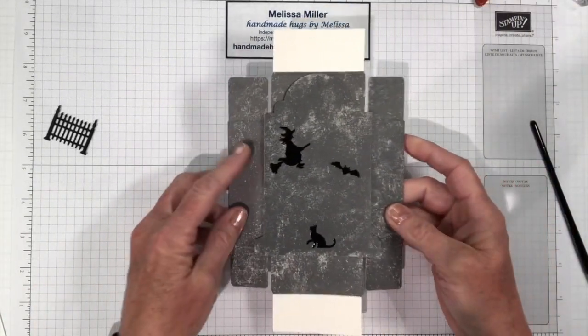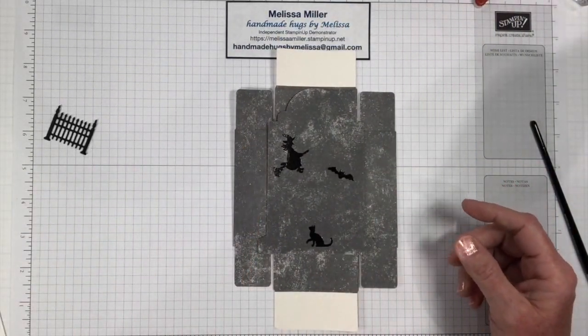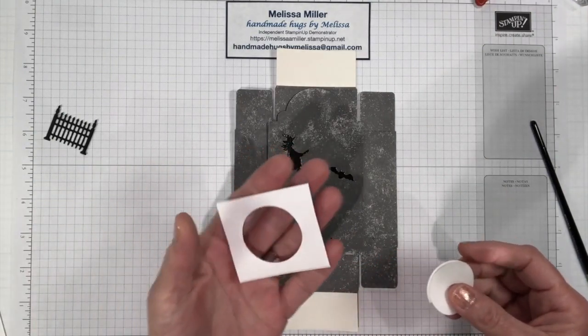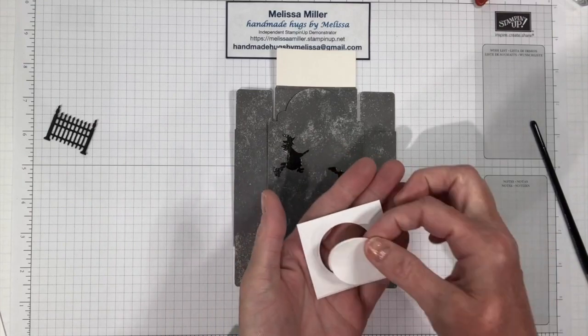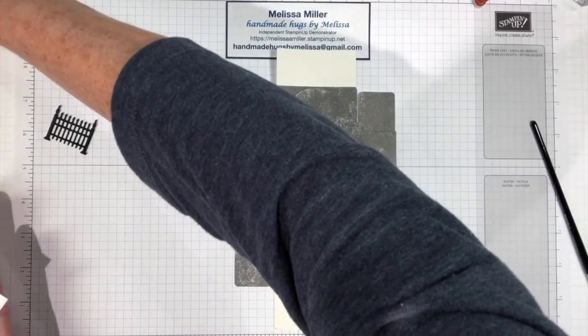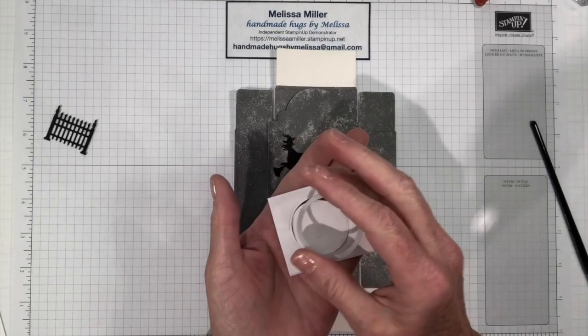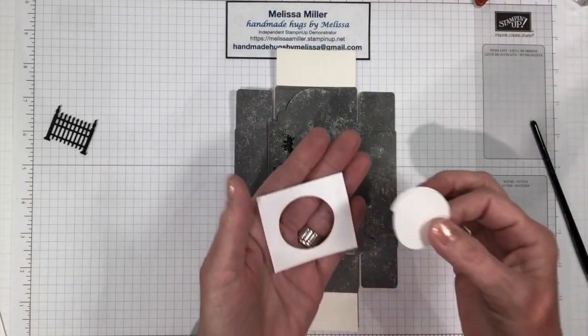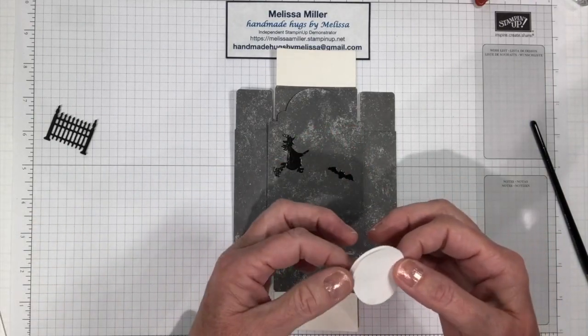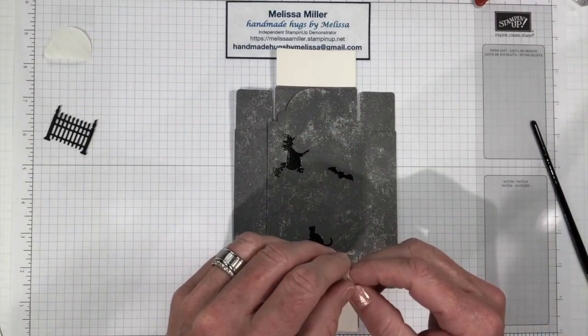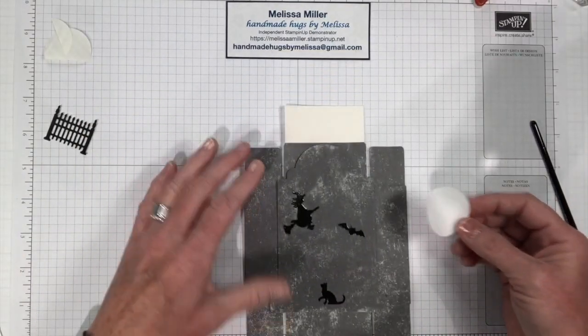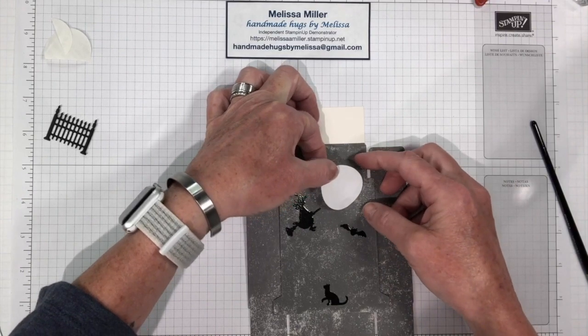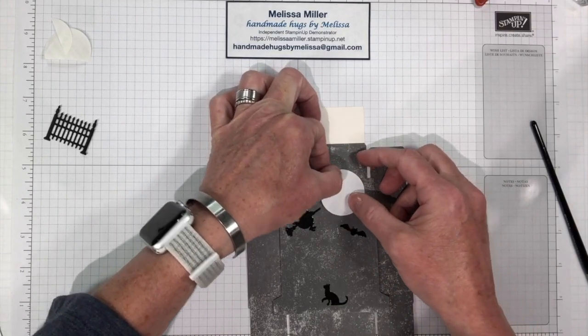Now we will need to mask our moon before we do our ink blending. What I did here was I took a little square of our masking paper, the Avery masking paper that I showed you in the last video, and I took the moon die and I just cut out the circle. We will be using both pieces, the negative and the positive piece. For our moon we're just going to peel off that and we can just see where we want to place it here. We want it to be kind of by the witch there.